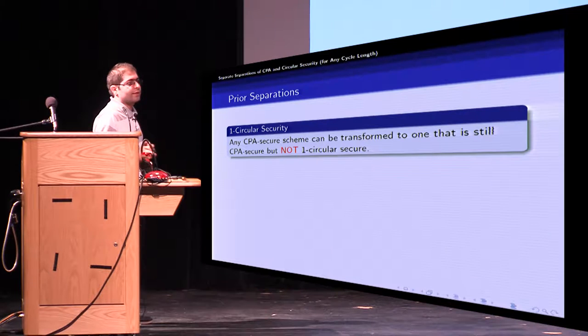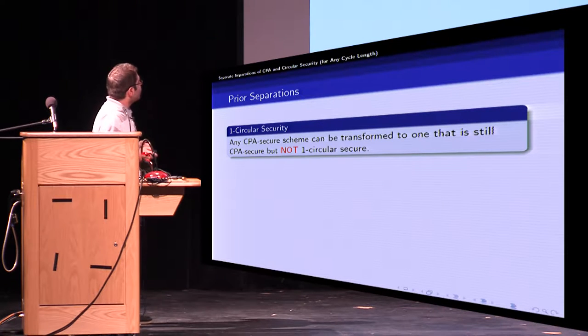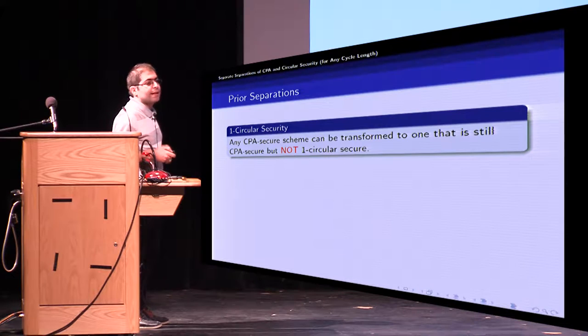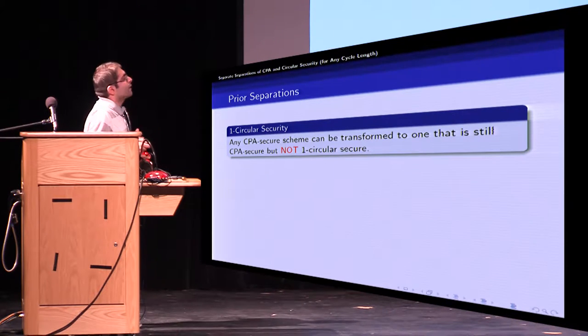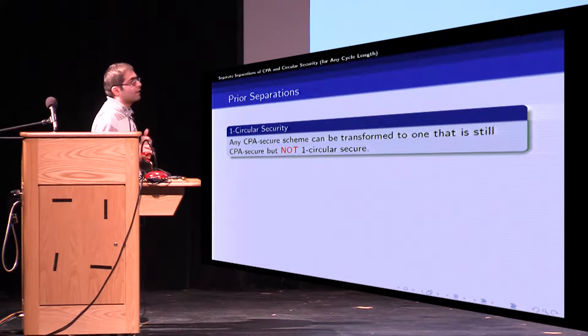Let's have a look at prior separations. We have this folklore result for one circular security which says that any CPA secure scheme can be transformed to one that is still CPA secure but not one circular secure.